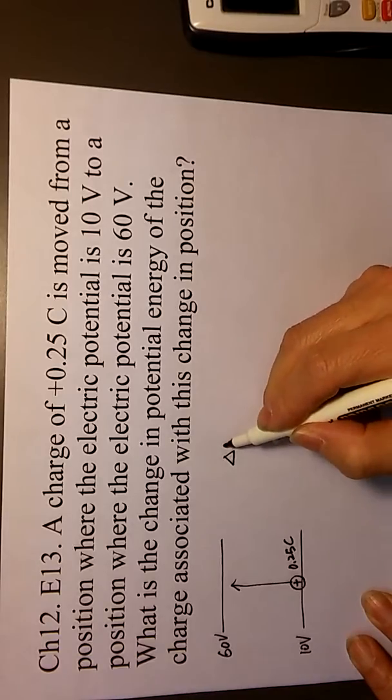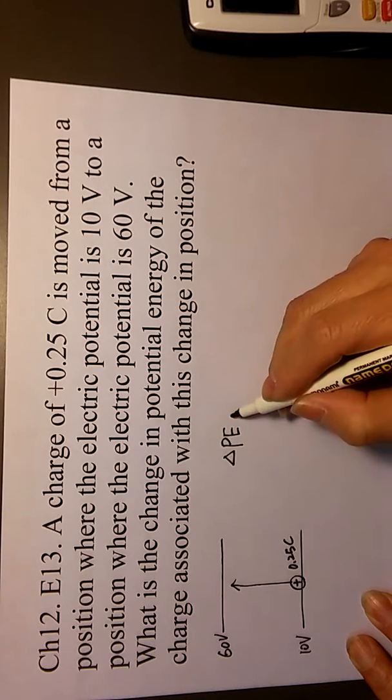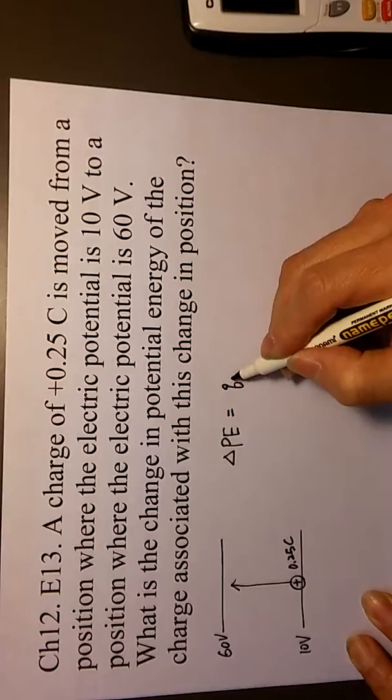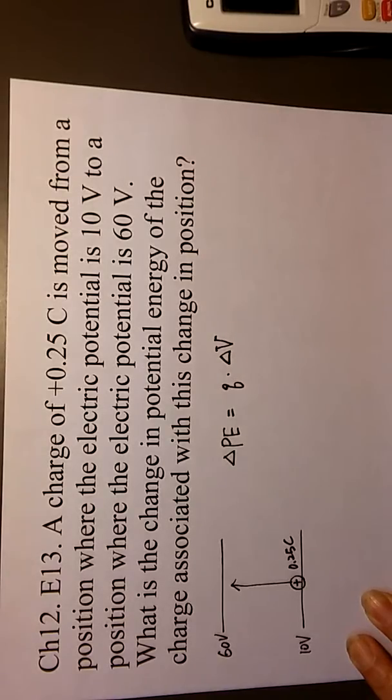Okay, your change of potential energy, electric potential energy change is Q times delta V. You can solve this way.